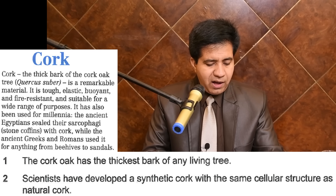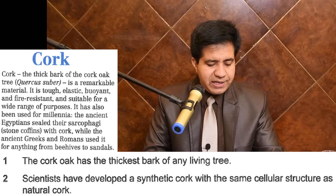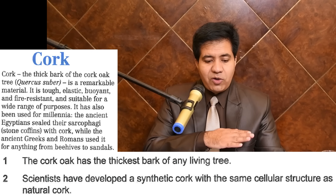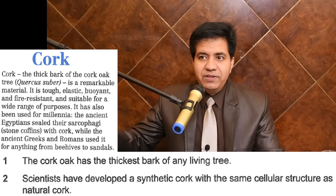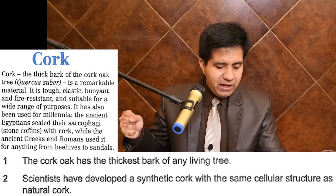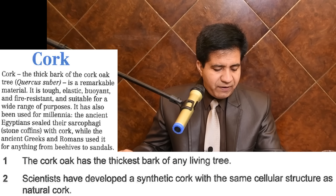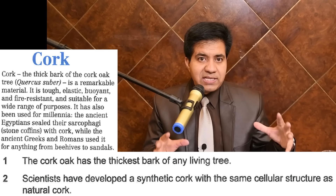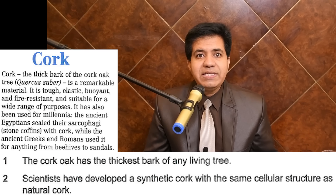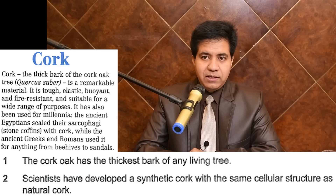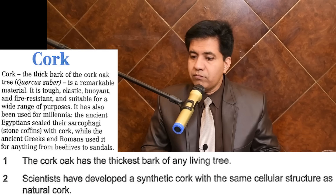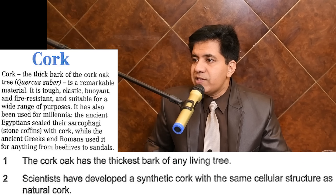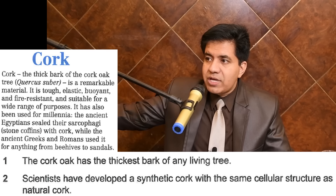Looking at the passage, it talks about the thick bark of the cork oak tree, gives its biological name, and describes it as a remarkable material — tough, elastic, buoyant, and fire resistant, suitable for a wide range of uses. But they have not mentioned that the cork oak has the thickest bark of any living tree. You might discuss it in the second paragraph, but you will not find 'the thickest bark of any living tree.' So the answer is Not Given.